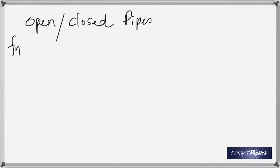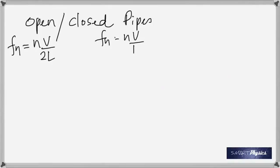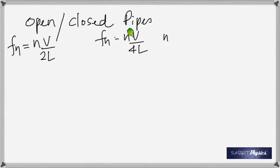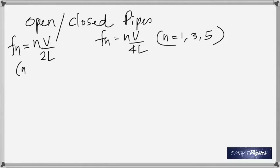Open and closed pipes: an open pipe is the better musical instrument because it produces both odd and even harmonics. For the nth harmonic of an open pipe, the formula uses 2L in the denominator. For a closed pipe using 4L, the values of n can only be odd numbers: 1, 3, 5, 7, etc. For an open pipe, n can be any integer.